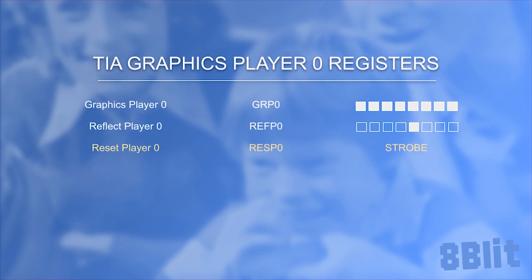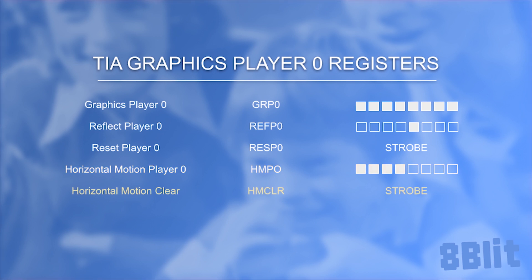Horizontal Motion Player 0, or HMP0, allows you to fine-tune the position of the graphic by up to eight pixels to the right or seven pixels to the left. Horizontal Clear will clear all horizontal motion registers, including the player and missile for both players and the ball as well — this is a strobe register, so writing any value will clear the motion registers. Horizontal Move will apply the fine tuning set in the horizontal motion registers — also a strobe register. This should only be used directly after a WSync to ensure the operation starts at the beginning and finishes before the end of the horizontal blanking.